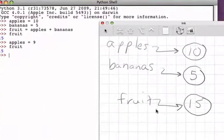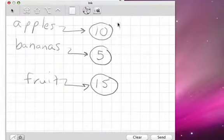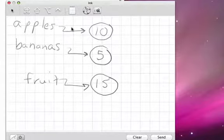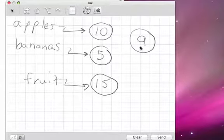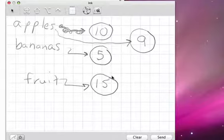Well, if we go back over to our picture, when we modified the reference from apple, what we did is we said we're going to do an assignment statement where apples is now going to refer to no longer the data object 10, but rather we're going to have apples refer to the data object 9. But notice when I evaluate fruit, fruit is still referring to the data object 15.